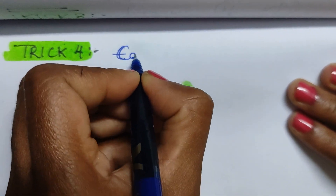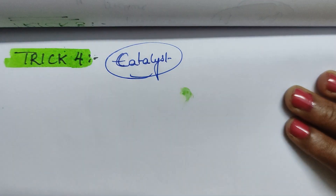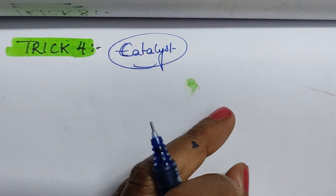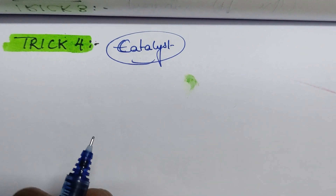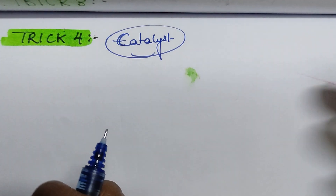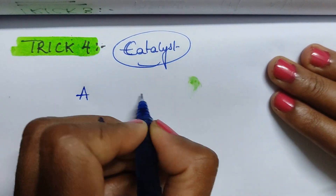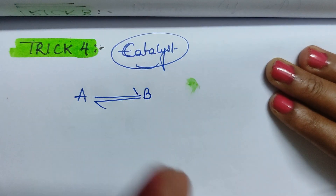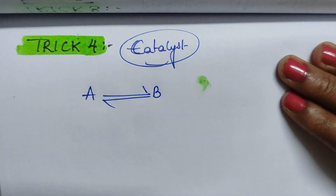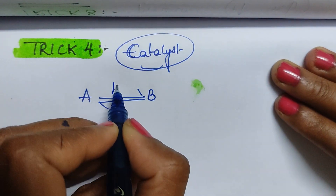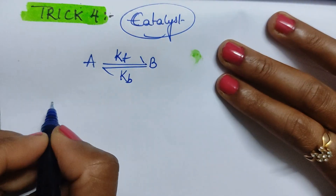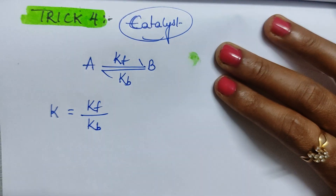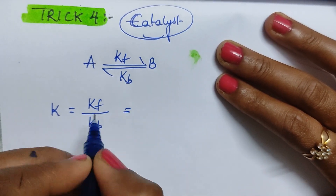Trick Number Four covers the effect of a catalyst. There are two types: positive catalyst (increases reaction speed) and negative catalyst (decreases reaction speed). When a catalyst is added to the reaction A → B, the rate of the forward reaction increases, so the rate constant for the forward reaction increases. The rate constant for the backward reaction also increases. Kc equals the rate constant of forward divided by the rate constant of backward.